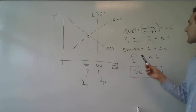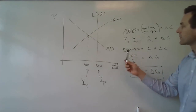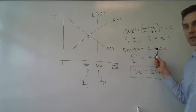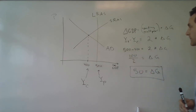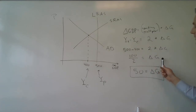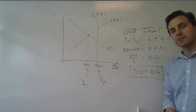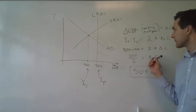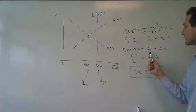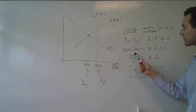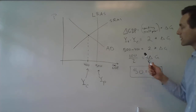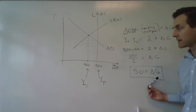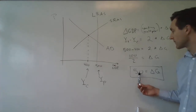Filling in the numbers: potential output is 500, current output is 400, so 500 minus 400 equals the spending multiplier times the change in government spending. We divide by two to solve for the change in G — 500 minus 400 is 100, divide by two — and we find that the change in government spending necessary to get the economy back to potential output is 50.